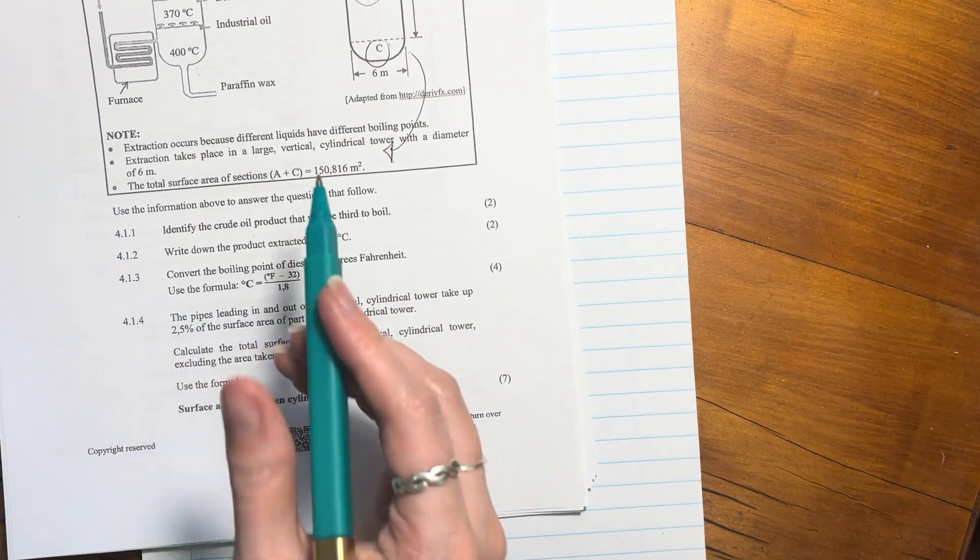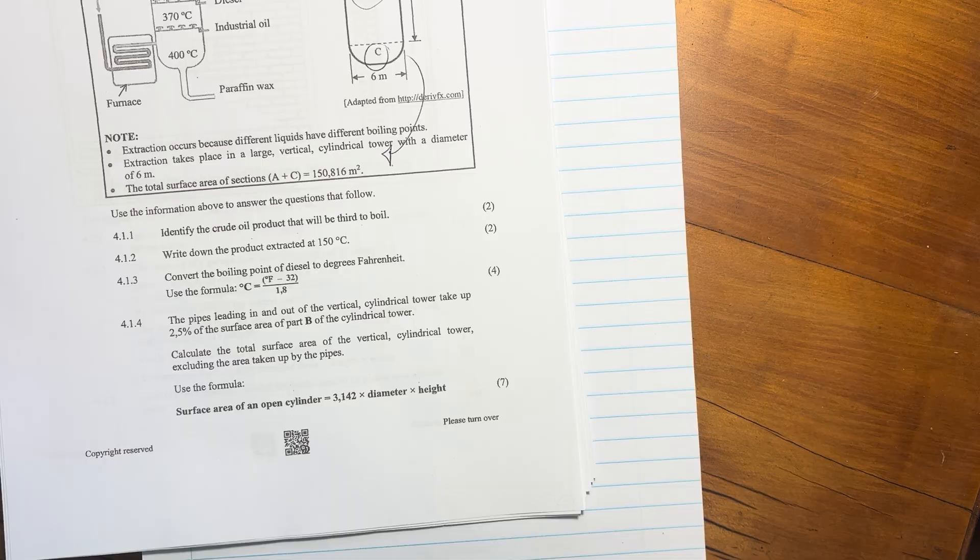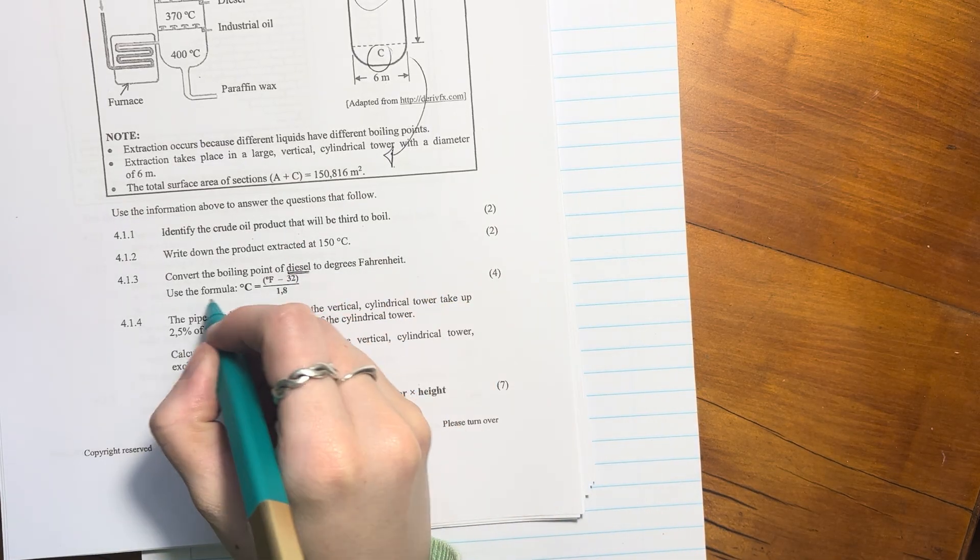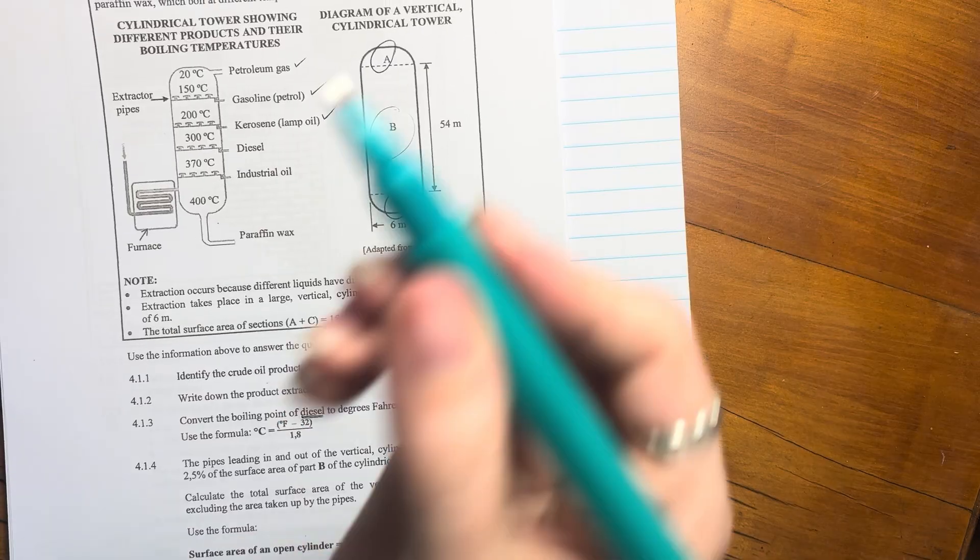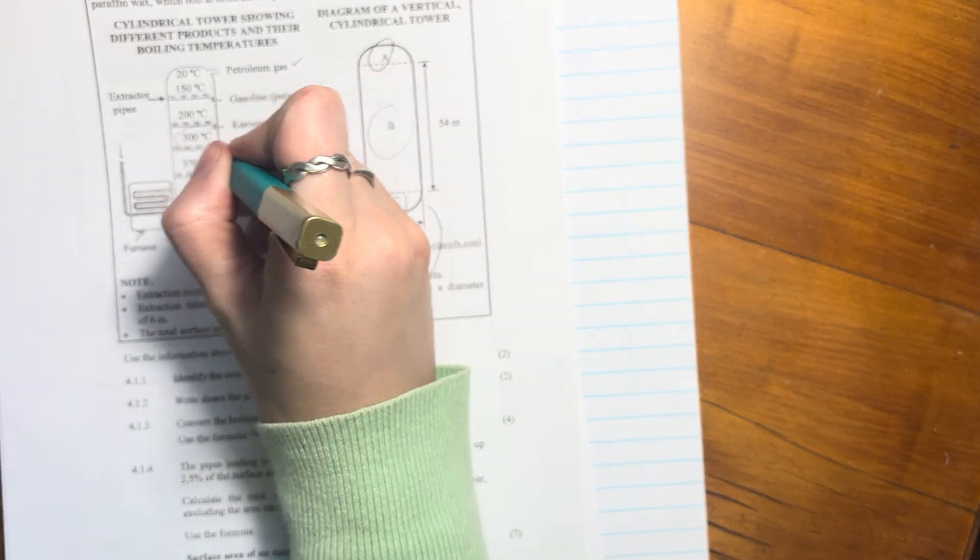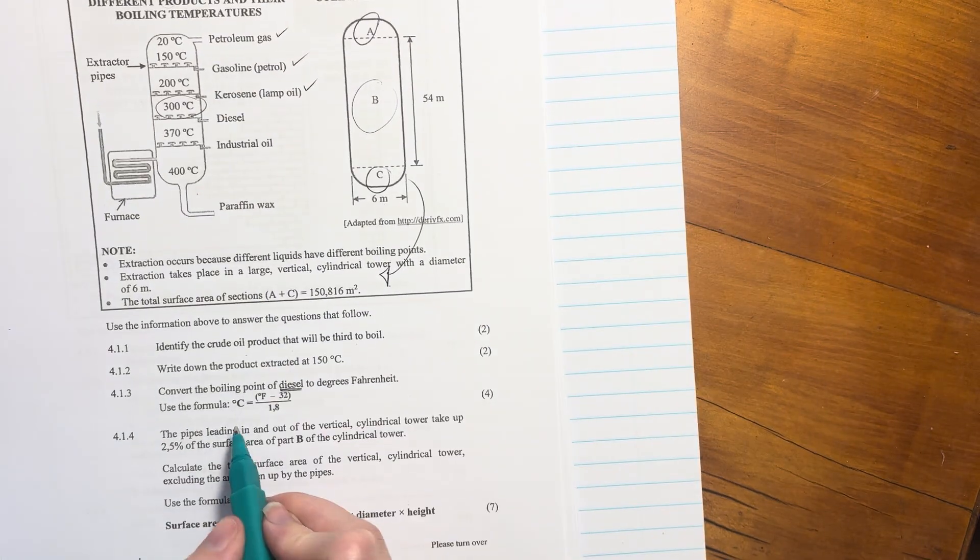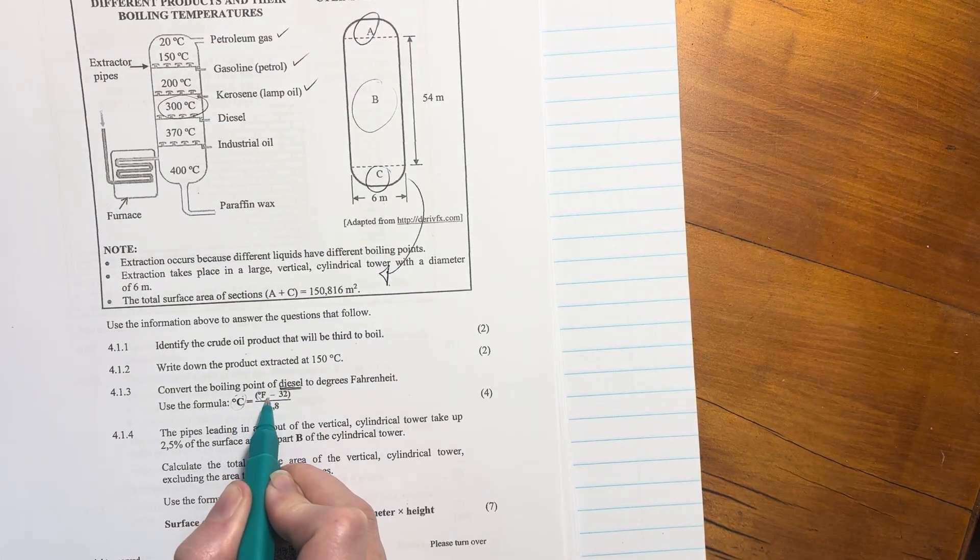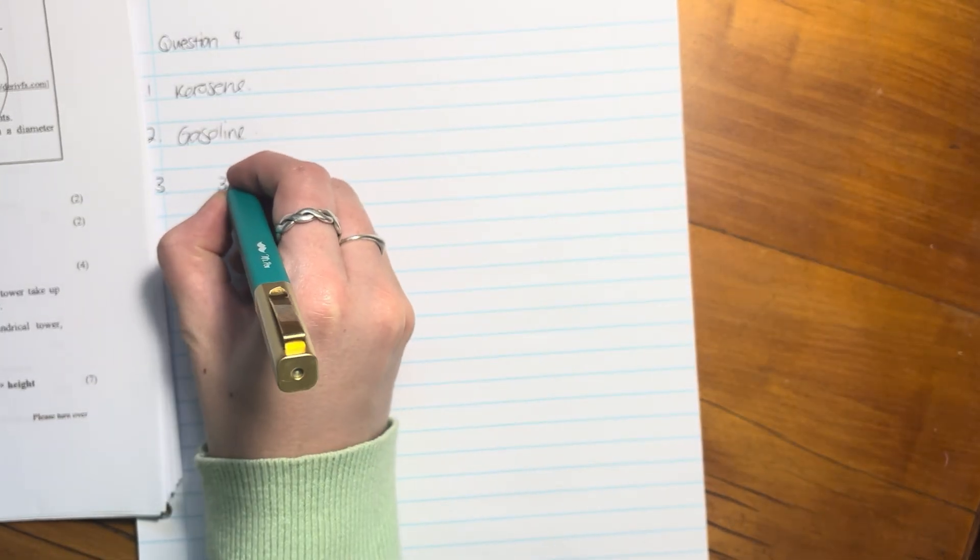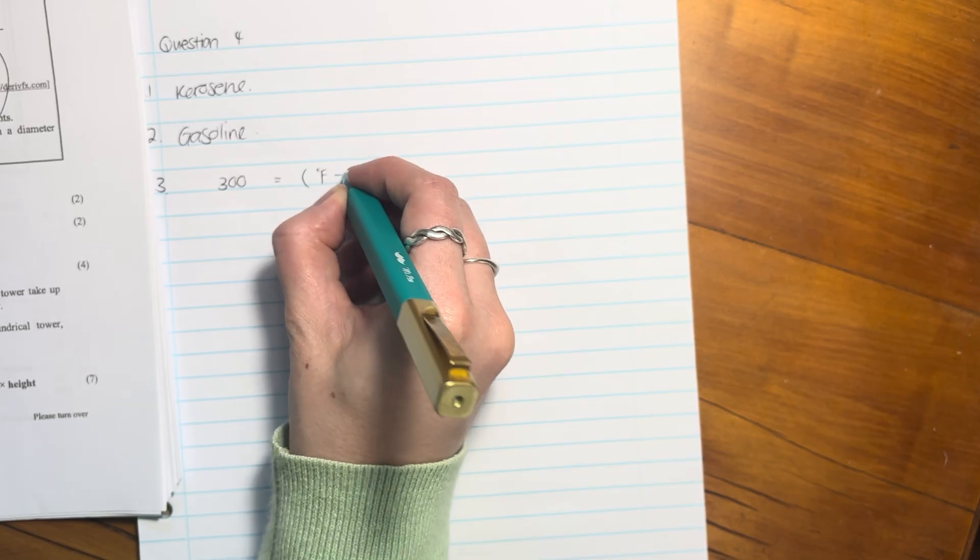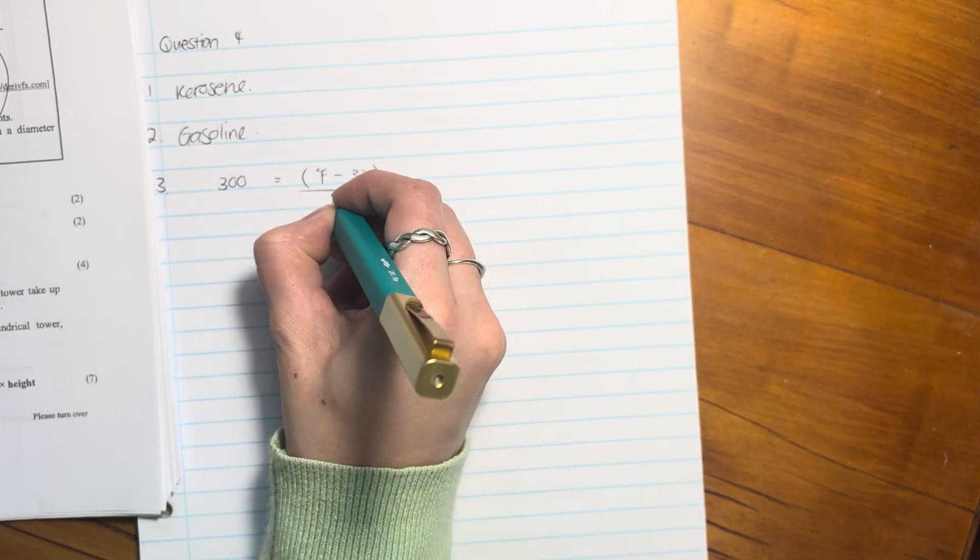4.1.3, convert the boiling point of diesel to degrees Fahrenheit using this formula. The boiling point of diesel is 300 degrees Celsius. We're going to put that into the Celsius over here, and then we have to find out the Fahrenheit. So we're going to say 300 equals degrees Fahrenheit minus 32 over 1.8.